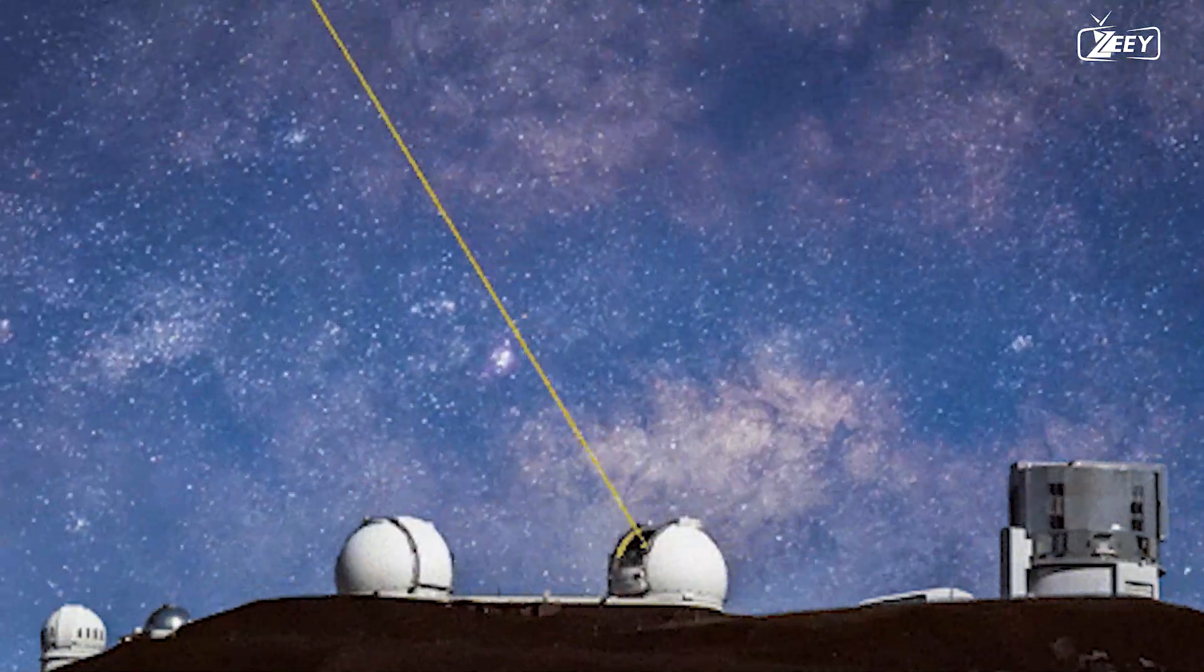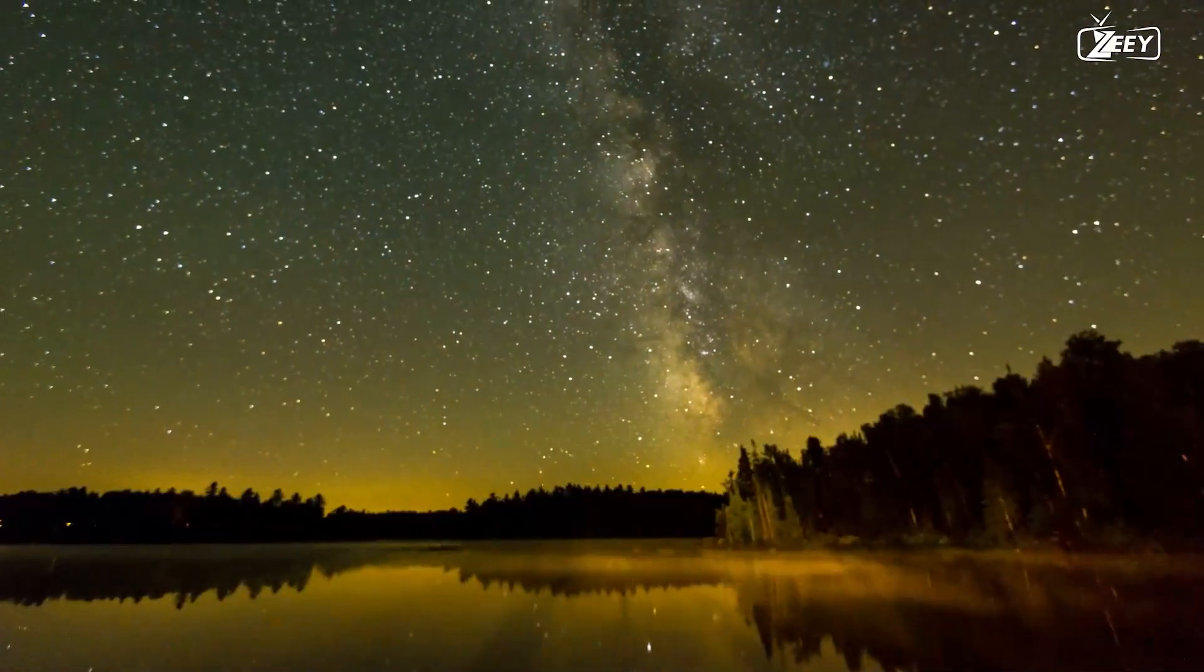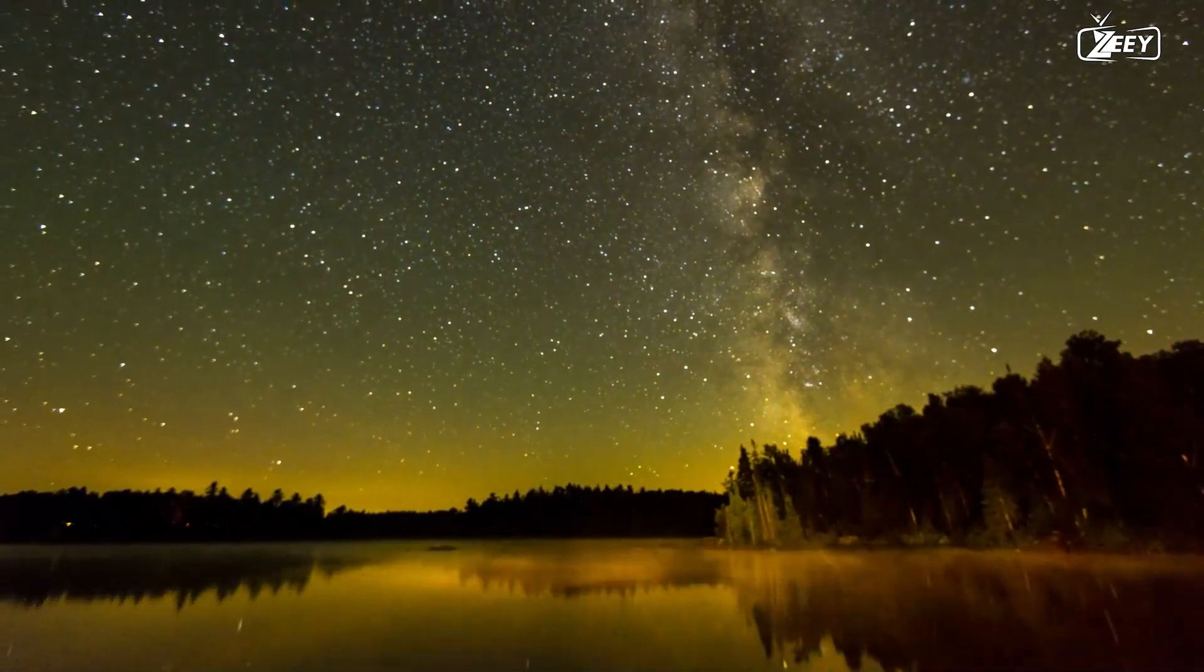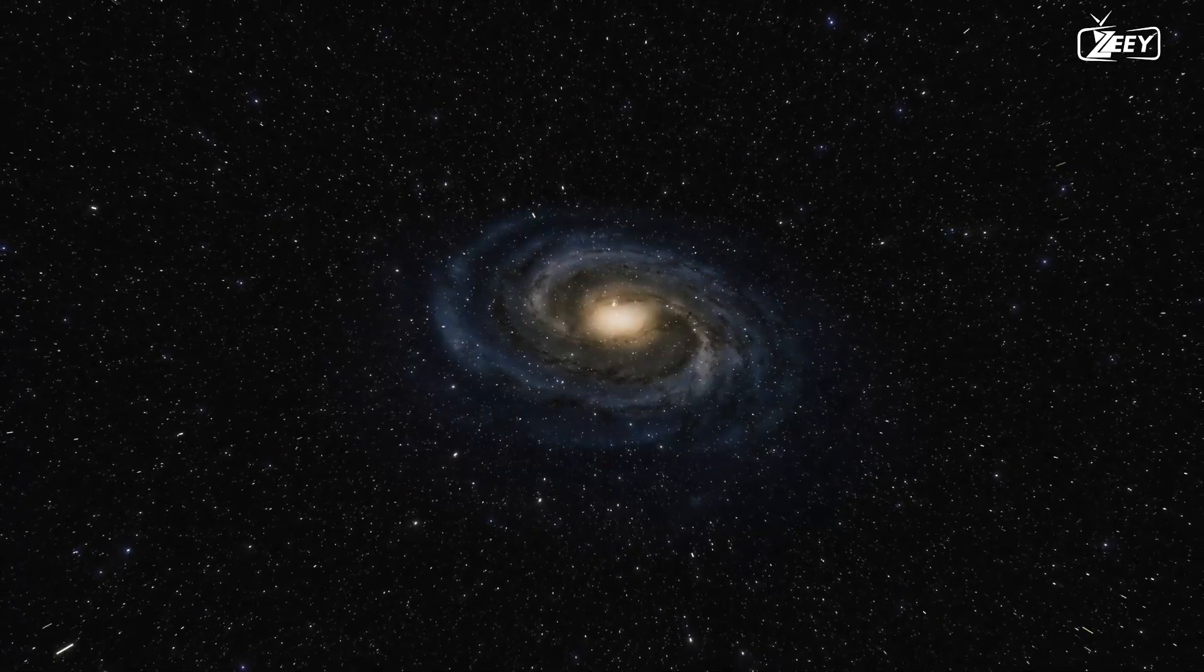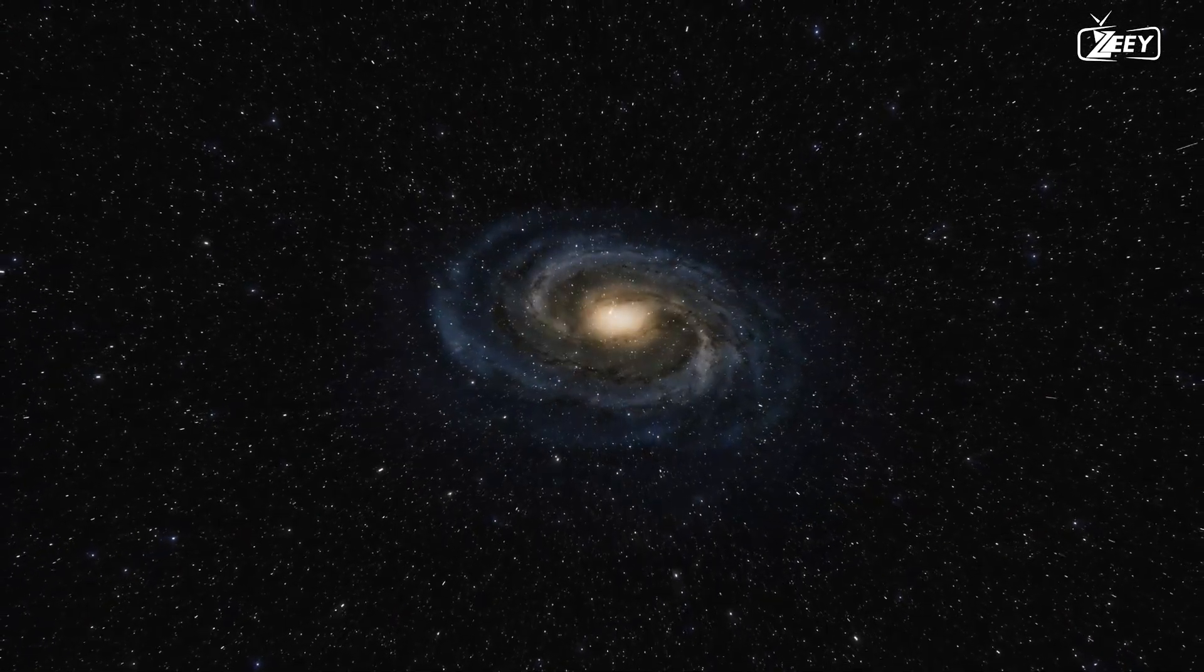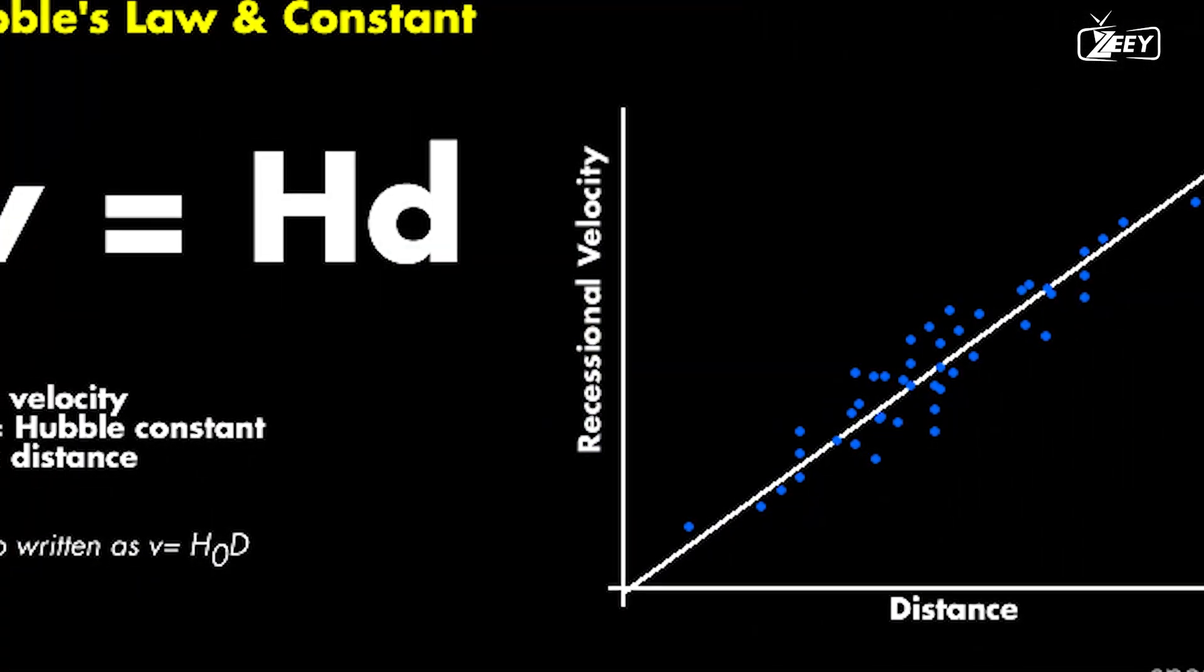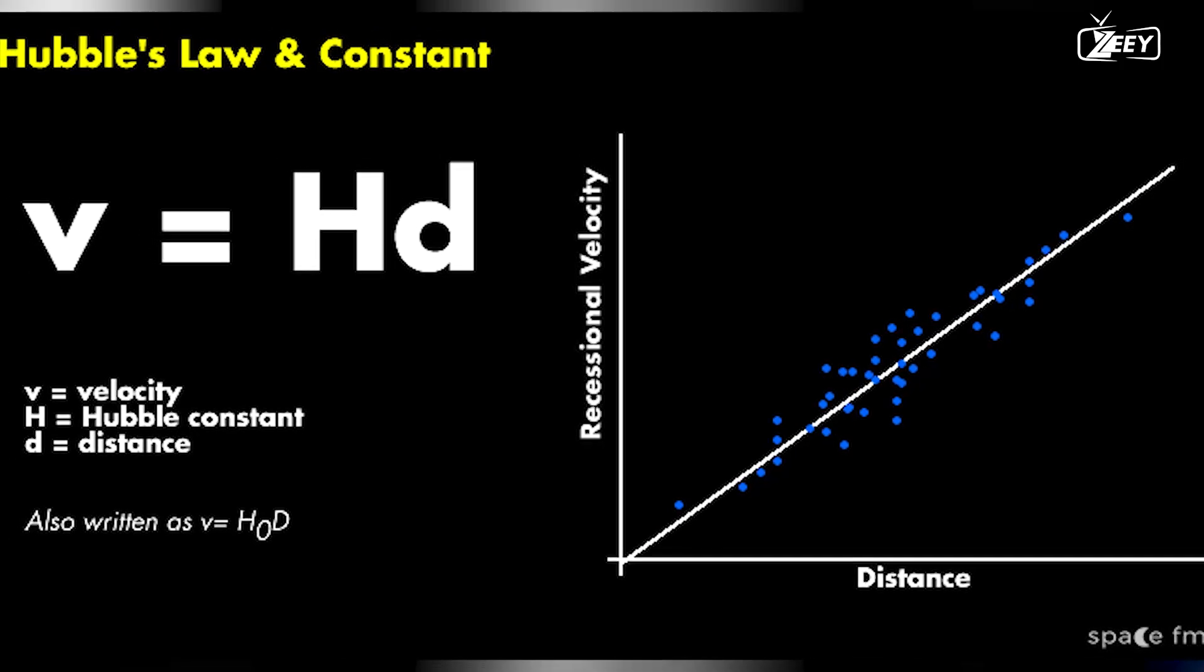Researchers have attempted to cap the Hubble constant's value throughout time. However, rather than reducing confusion, the findings always added to it, creating a cosmology crisis. But first, let's try to comprehend what the Hubble constant physically means before moving on to this crisis. The recessional velocity of a galaxy and its distance can be directly correlated thanks to the Hubble constant.